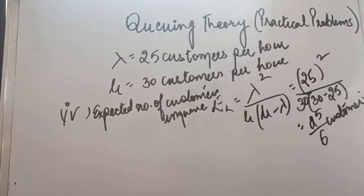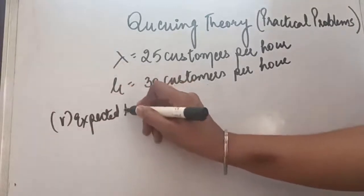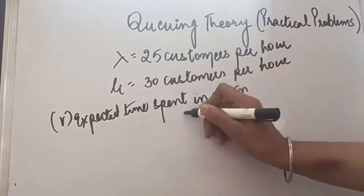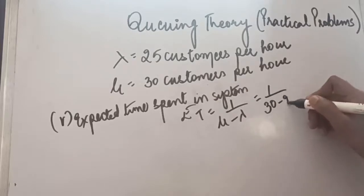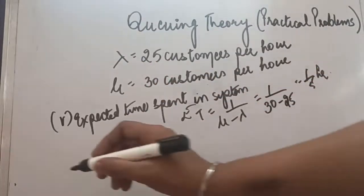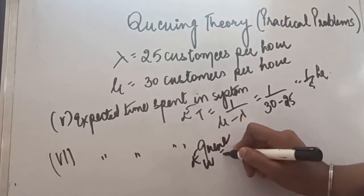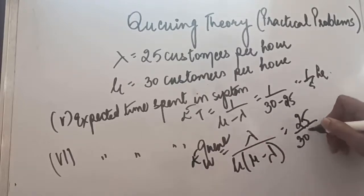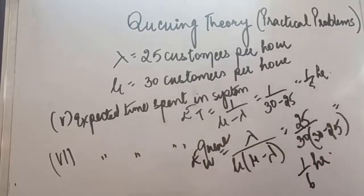Next, the expected time spent by the customer in the system is ET, with formula 1 upon (mu minus lambda) — that is 1 upon (30 minus 25) — giving 1 upon 5 hours. The expected waiting time in the queue is EW, with formula lambda divided by mu times (mu minus lambda): 25 divided by 30 times (30 minus 25), giving 1 upon 6 hours.